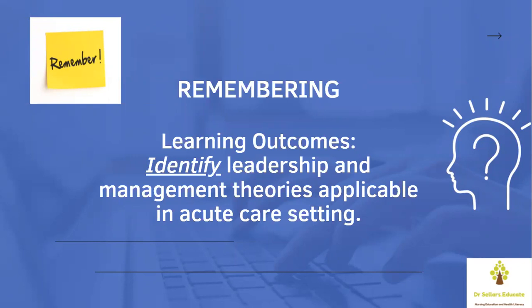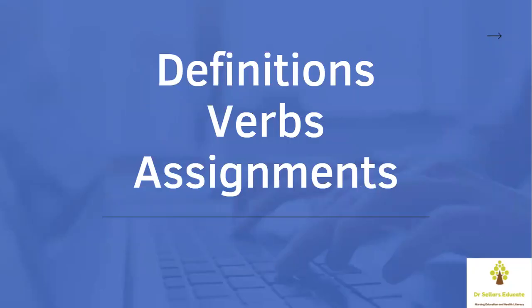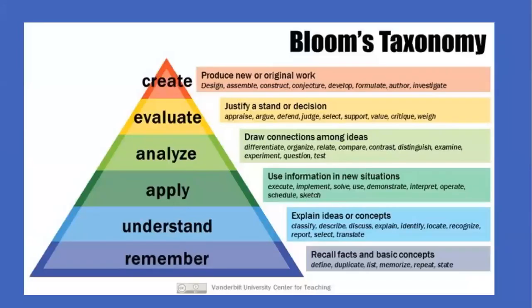Going back to what we've mentioned, understanding the three components as they relate to Bloom's Taxonomy levels — definitions, the verbs, and assignments associated with each level. Let's take a look again at the Bloom's Taxonomy pyramid. The next level up is Understand.